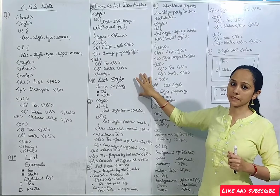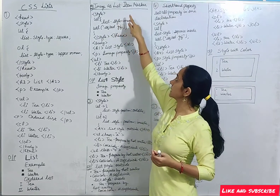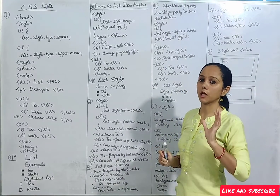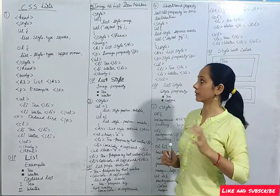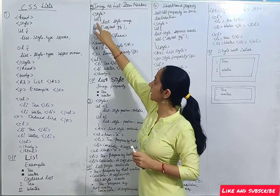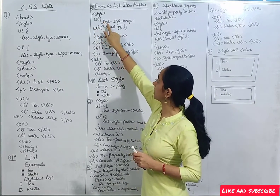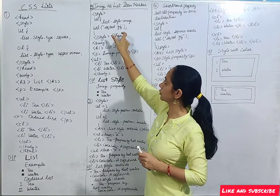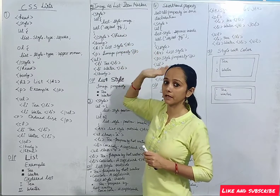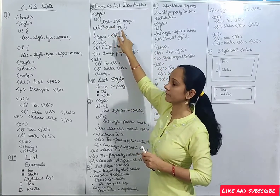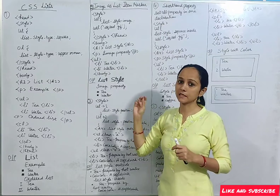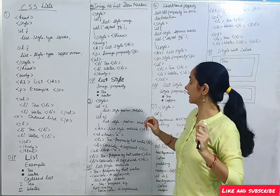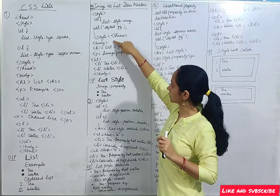After that we will see the second example: image as a list item marker. You can add an image in the bullet form for an unordered list. In the style, for the ul, we use list-style-image and provide a URL. The URL here is 'square-red.gif', so the bullet will be a square red color. Then we close the style.